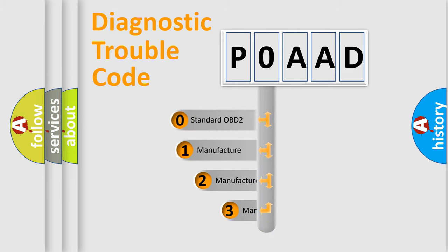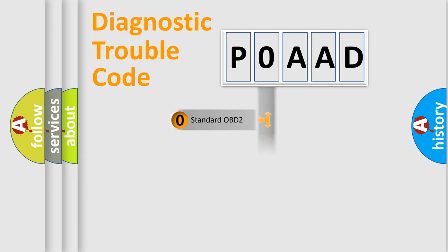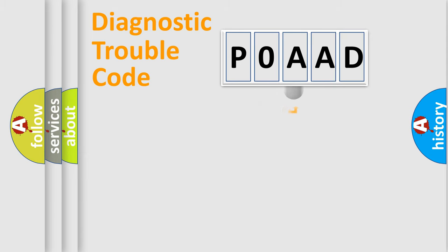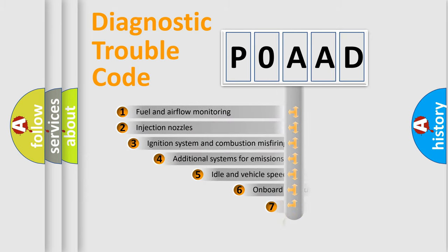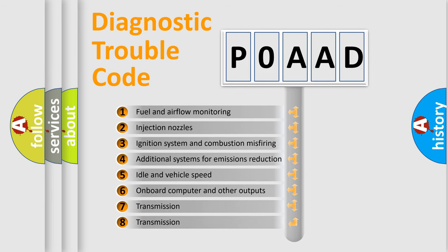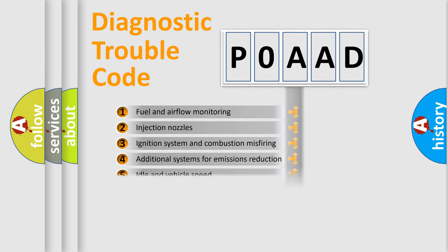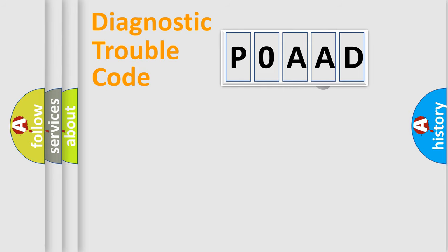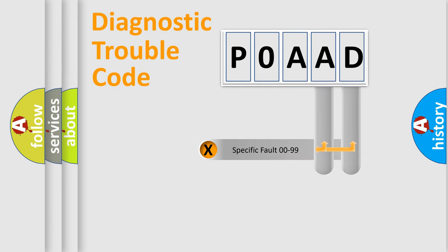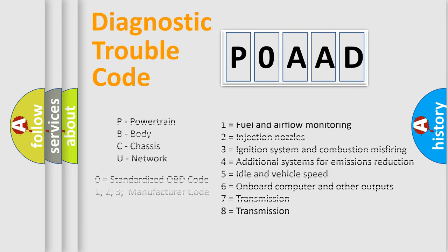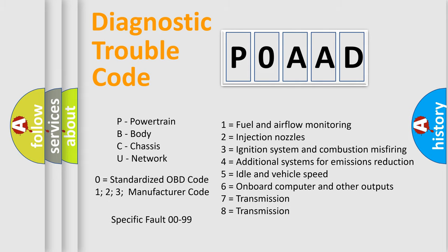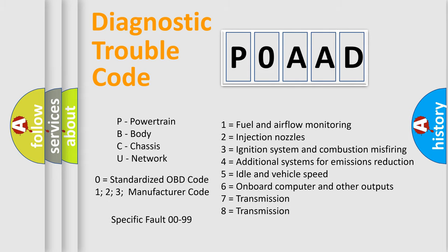If the second character is expressed as zero, it is a standardized error. In the case of numbers 1, 2, or 3, it is a more specific expression of a car-specific error. The third character specifies a subset of errors. This distribution is valid only for the standardized DTC code, and only the last two characters define the specific fault of the group. This division is valid only when the second character code is expressed by the number zero.